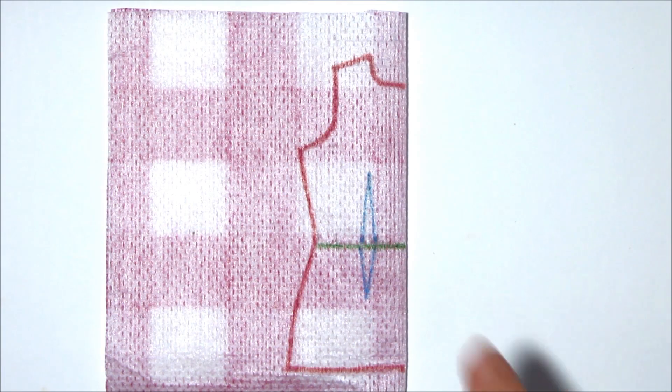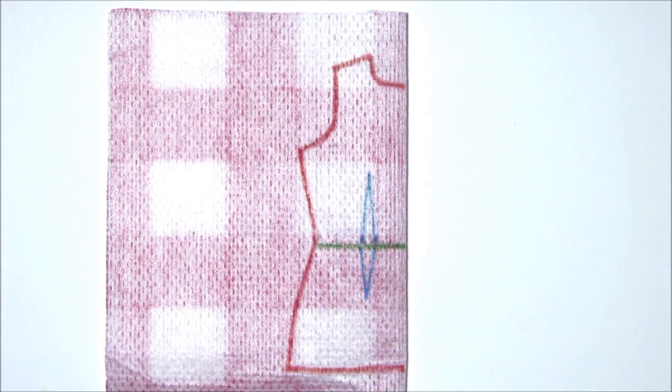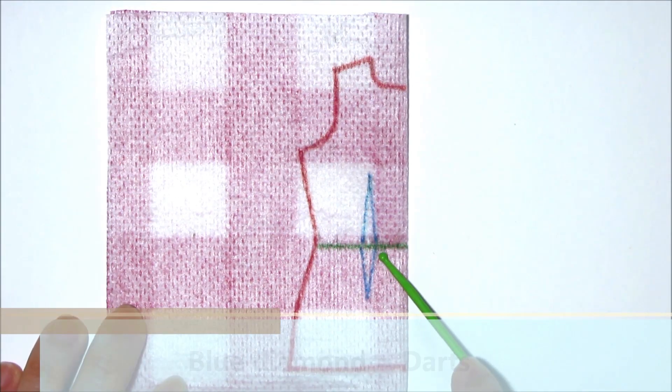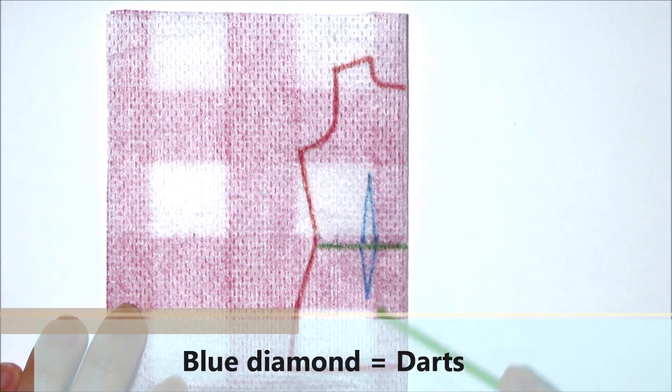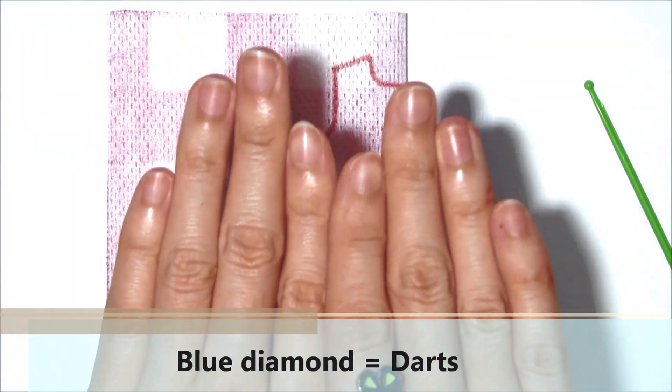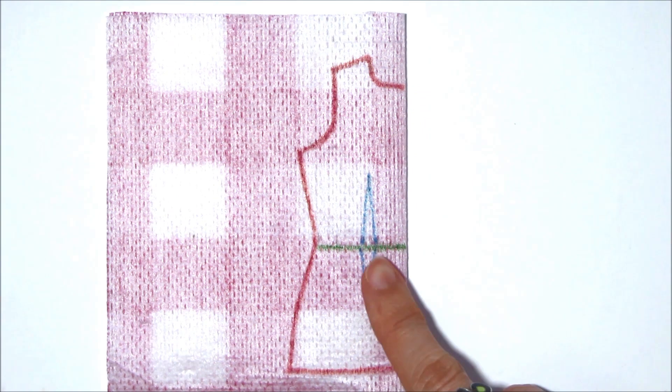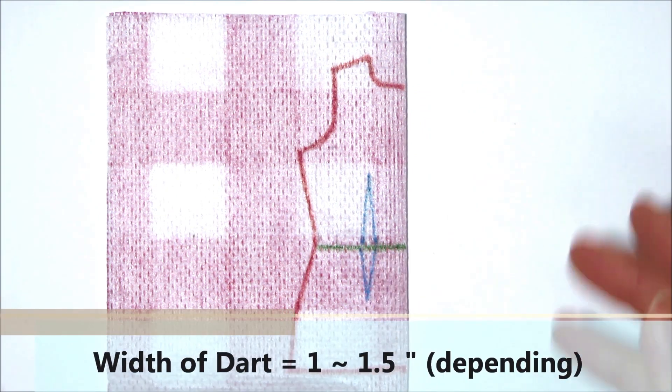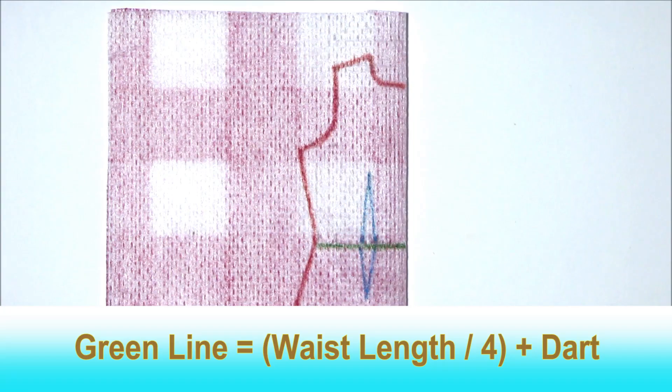And so this is roughly how your draught will look like. This blue diamond here is what we call a dart. It is to help the dress heel to the natural body shape better. The width of a dart is usually from one inch to a maximum of 1.5 inches.